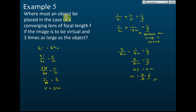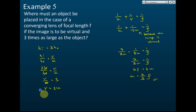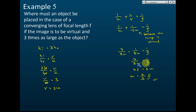We want to find the object distance, so we substitute v with three u. From the lens equation, one over u plus one over v equals one over f. The image is virtual, so v equals negative three u. We need a common denominator: three over three u minus one over three u equals one over f, giving two over three u equals one over f. Rearranging: two f equals three u, so u equals two over three f.